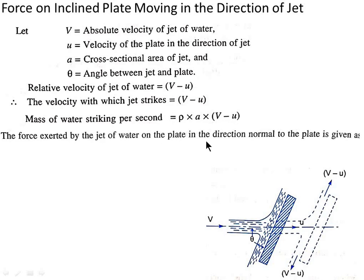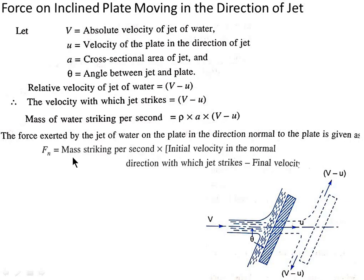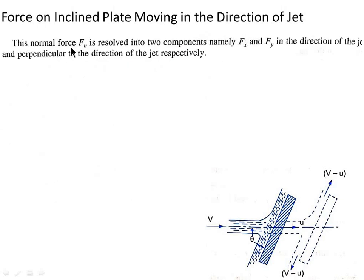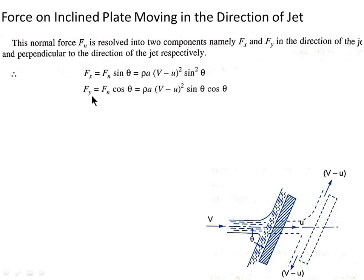The force exerted by the jet on the plate in the direction normal to the plate is given as Fn equals mass striking per second into initial velocity in the normal direction minus final velocity. Therefore Fn equals rho A (V minus U) into (V minus U) sin theta, giving Fn equals rho A (V minus U)² sin theta. This normal force Fn is resolved into two components: Fx equals Fn sin theta, which gives rho A (V minus U)² sin²theta, and Fy equals Fn cos theta, giving rho A (V minus U)² sin theta cos theta.